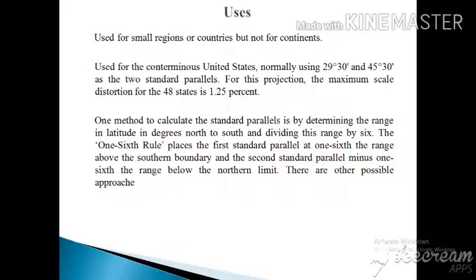Two standard parallels is used for small regions or countries but not continents. They use for example the conterminous United States, latitudes 29 degrees 30 minutes and 45 degrees 30 minutes as the two standard parallels. For this projection the maximum scale distortion for the 48 states is 1.25 percent. Okay, thank you.